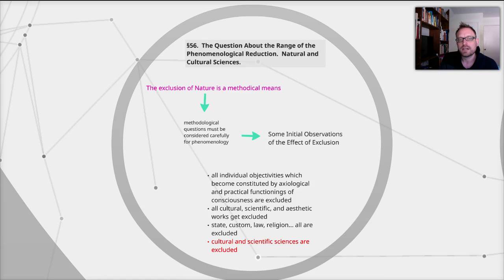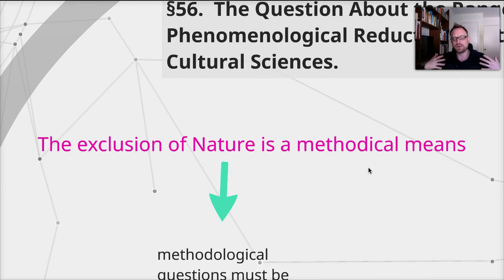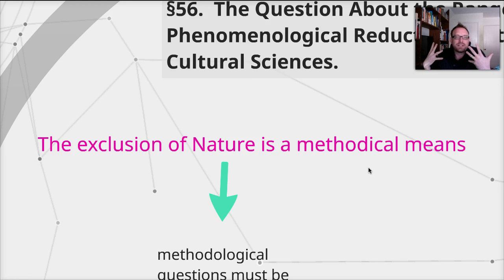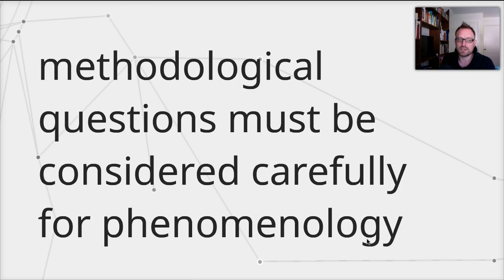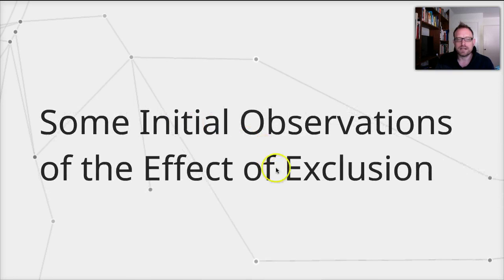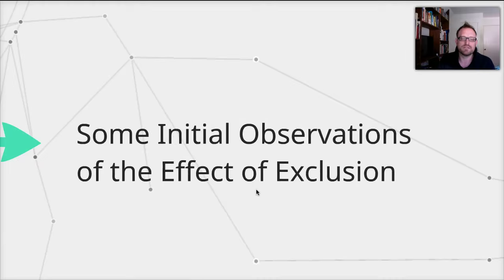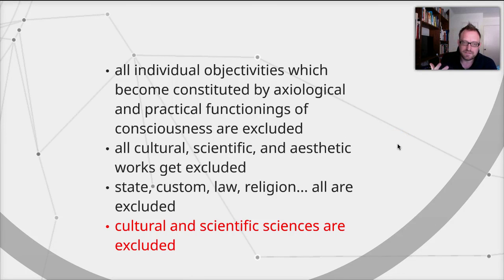Section 56 begins with the question about the range of phenomenological reductions. Keep in mind that the exclusion of nature is a methodical means. When we exclude the actuality of nature and analyze our perceptions as mental formations in immanent experience — immediately given to us — we're doing it for methodical reasons. Husserl writes that all individual objectivities constituted by axiological and practical functionings of consciousness are excluded.